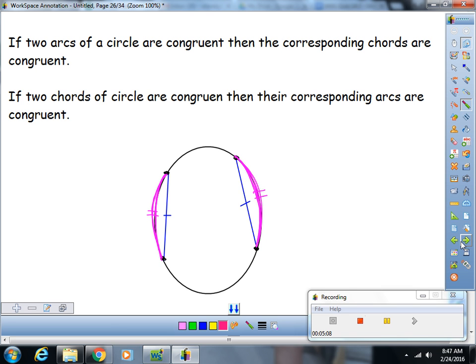And so finally, here are your chords and arcs. If two chords of a circle are congruent, then their intercepted arcs are congruent. If two arcs of a circle are congruent, then their corresponding chords are congruent. Go ahead and pause the video, because there's a boom coming. Can I get a boom? Boom!